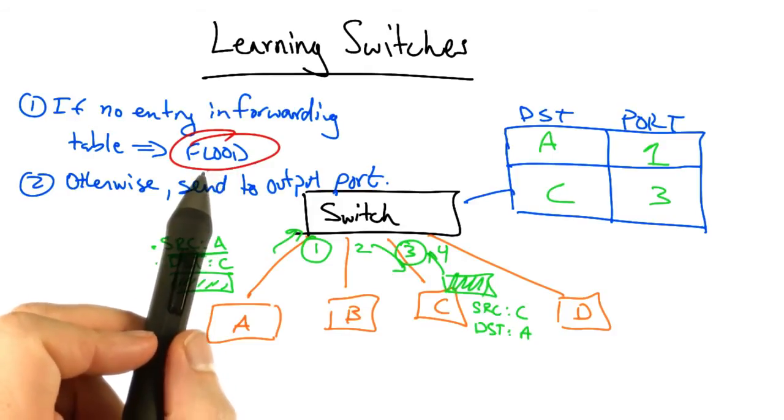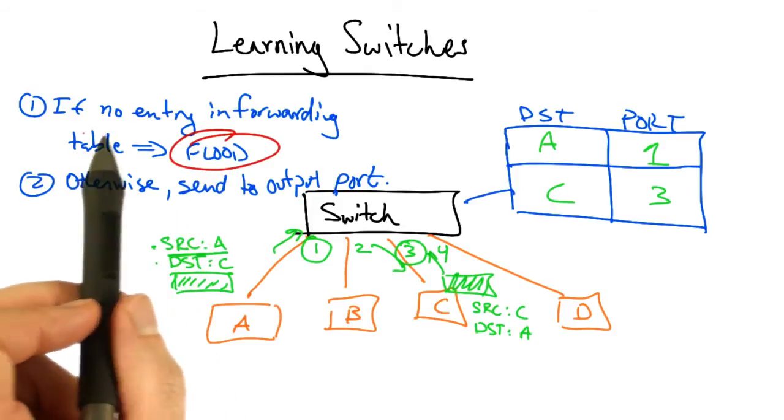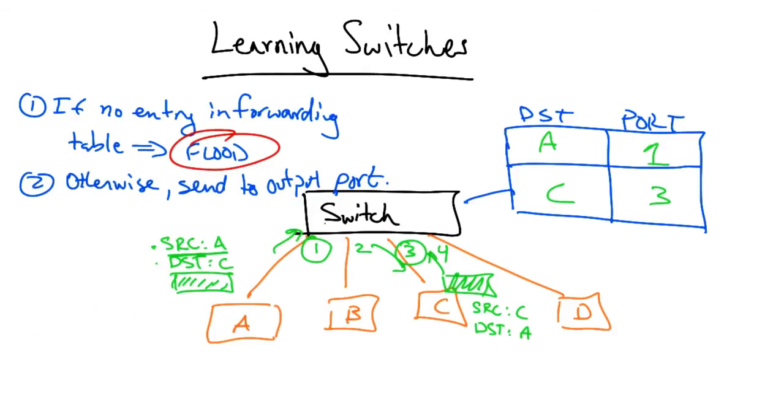Now, you should notice that flooding is still sometimes necessary. If there's no entry in the forwarding table, the switch needs to flood. And also, there are broadcast frames, such as ARP queries.